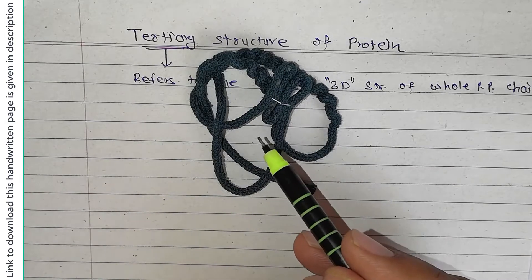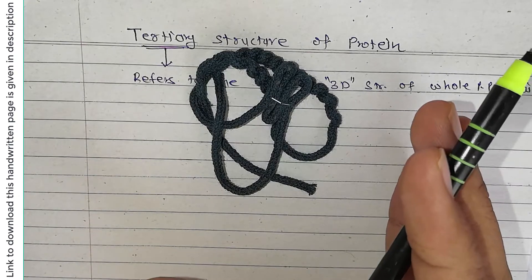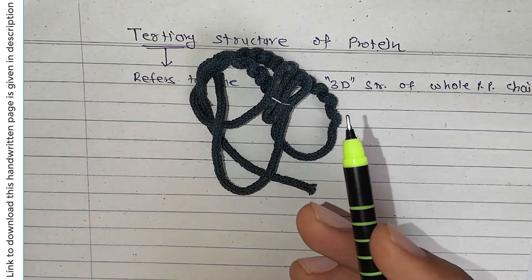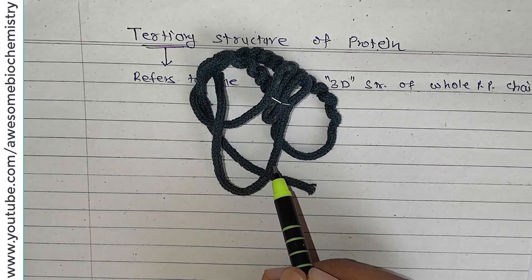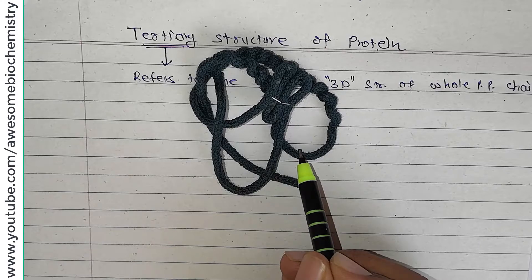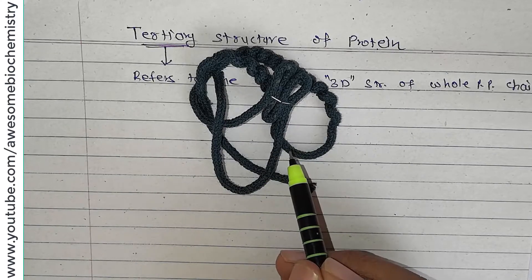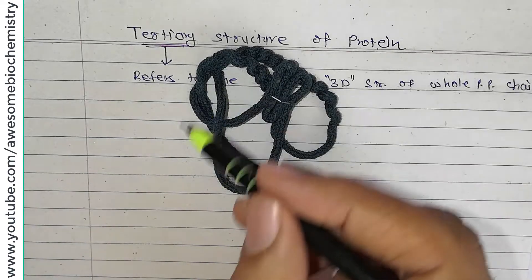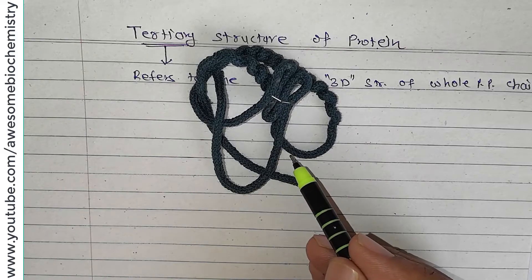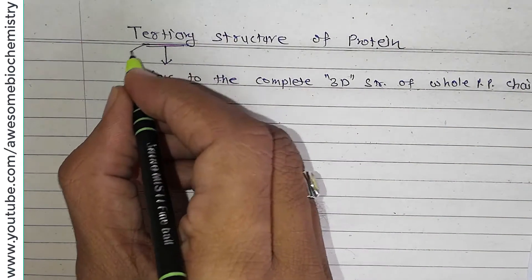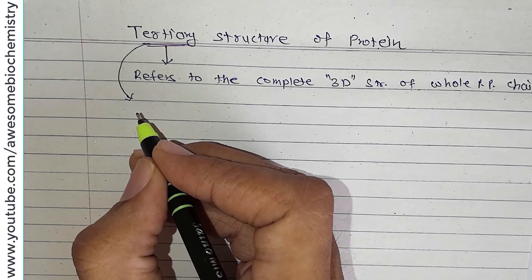An important fact is that through three-dimensional folding, two amino acids that are very far from each other in the primary sequence can be brought near to each other. For example, one amino acid and another that are far apart in the primary sequence can be close together in the tertiary structure due to folding.